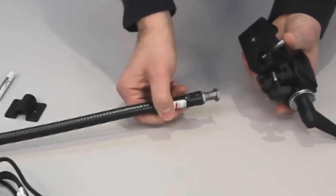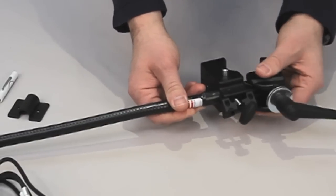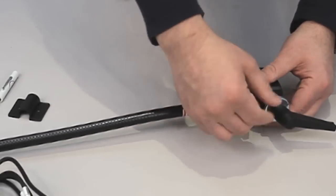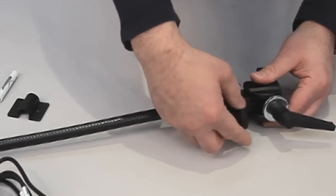And then depress this spring release, and it will lock the clamp in place. Now it's not going to move, but if you want to make it extra secure, you can just tighten this up.